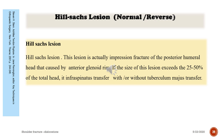Hill-Sachs lesion, both normal and reverse: the Hill-Sachs lesion is an articular impression fracture of the posterior humeral head caused by the anterior glenoid rim. If the size of this lesion exceeds 25 to 50% of the total head, infraspinatus transfer with or without tuberculum majus transfer is necessary.